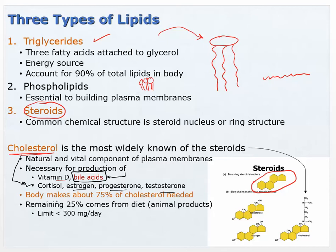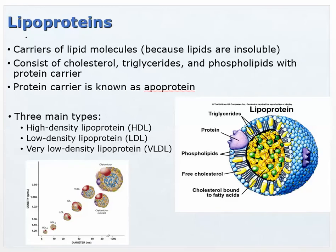The body makes about 70–75% of the cholesterol it needs — which is why the genetic factor is so important. The remaining 25% comes from the diet. If you don't get enough cholesterol from diet, the liver will simply increase its production rate to compensate.